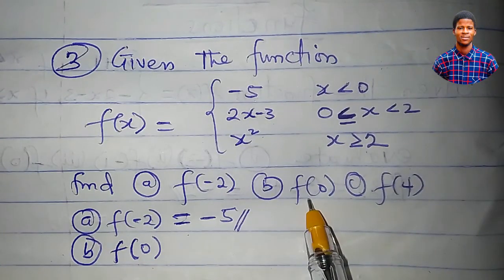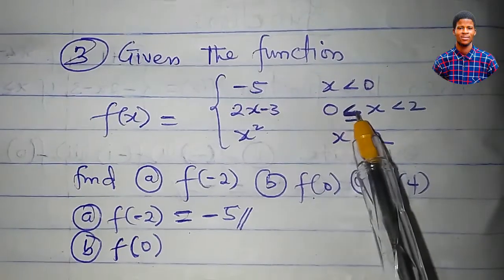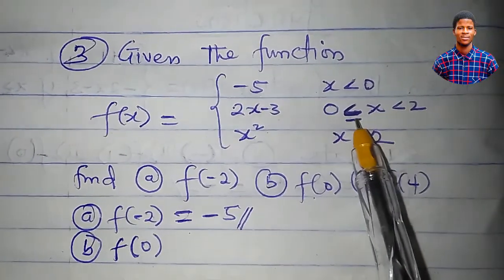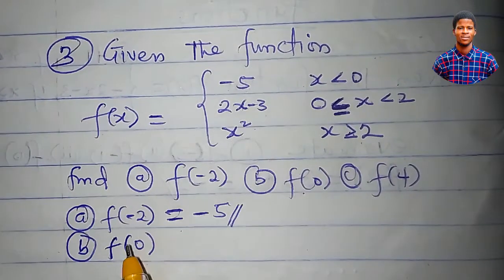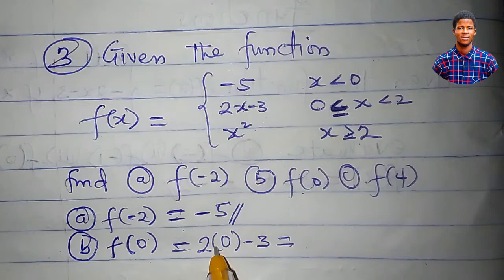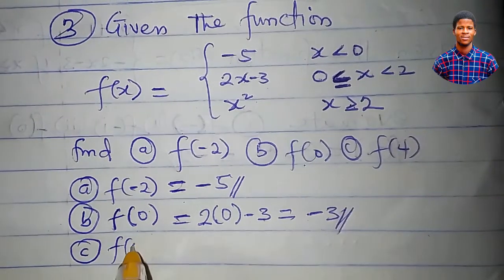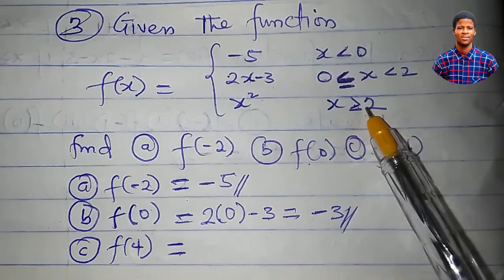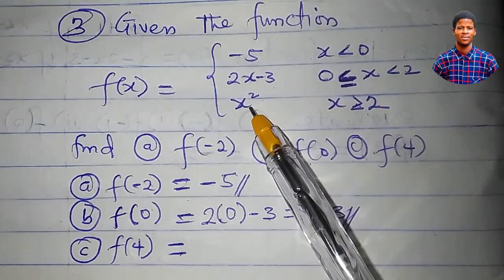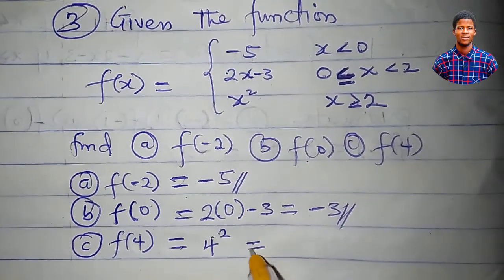What then is f(0)? Looking at the intervals, I can see that the condition says 0 less than or equal to x, meaning x is equal to 0 is included. So I use the sub-function 2x minus 3 to evaluate f(0). This equals 2 times 0 minus 3. 2 times 0 is 0, so 0 minus 3 is minus 3. For f(4): in the interval x greater than or equal to 2, I can find 4 because 4 is greater than 2. So f(4) equals 4 squared, which is 16.